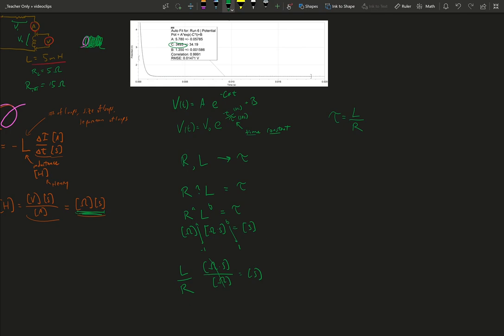In this case, my circuit has an inductance value of 5 millihenries, that's the inductor that's attached to the Vernier board, and the total resistance of my circuit is 15 ohms.